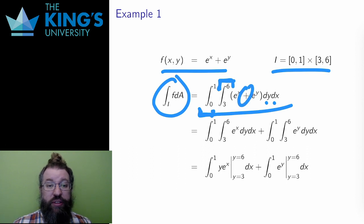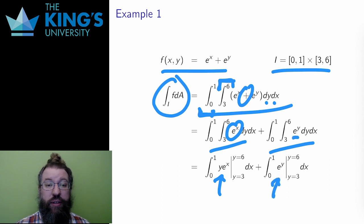The integral here is the sum of two pieces, so I'll split them up. In the first part, e to the x is constant as far as y is concerned, so its antiderivative is y e to the x. Then the antiderivative of e to the y is, of course, e to the y.